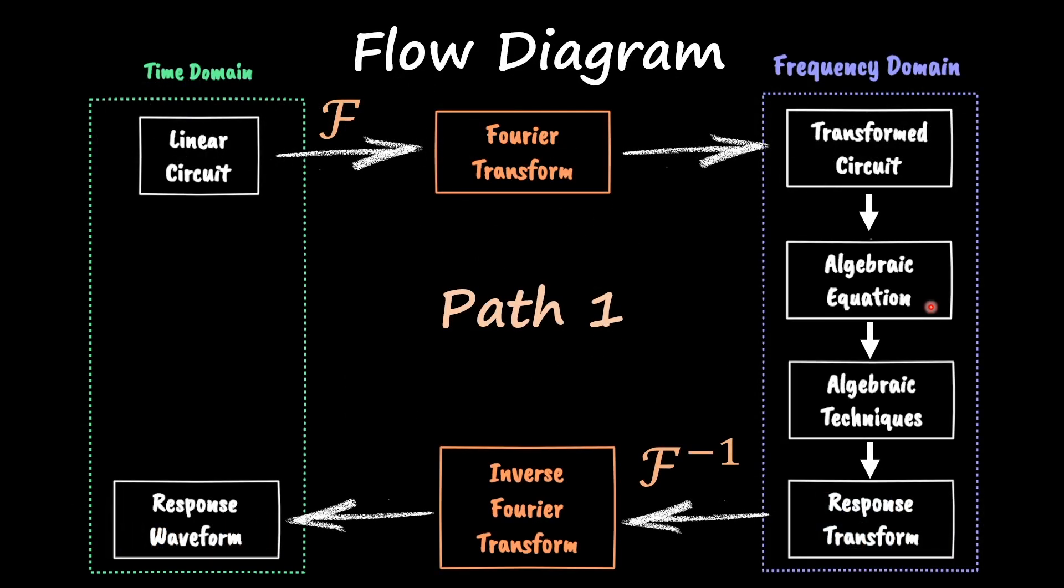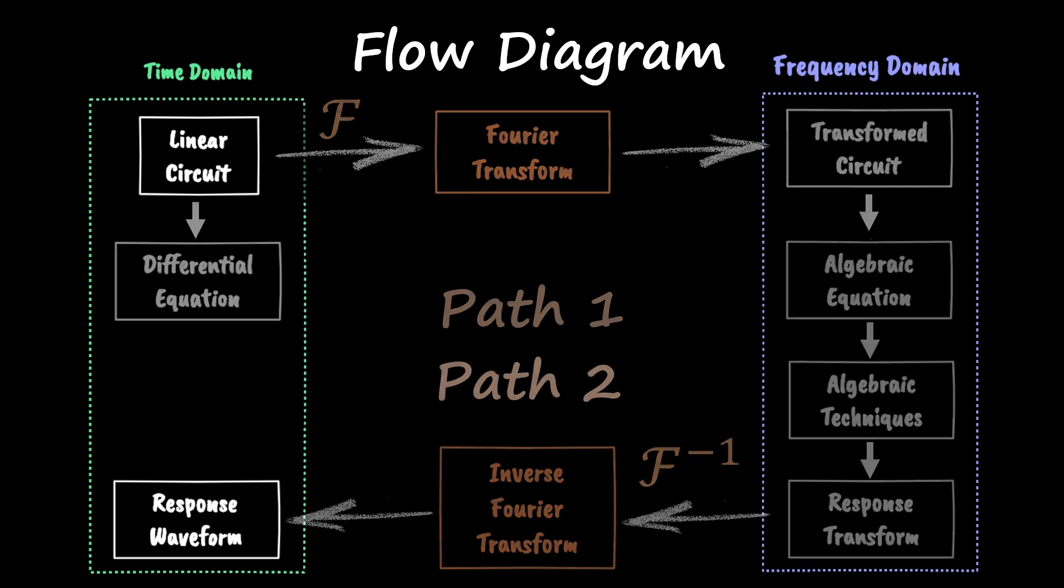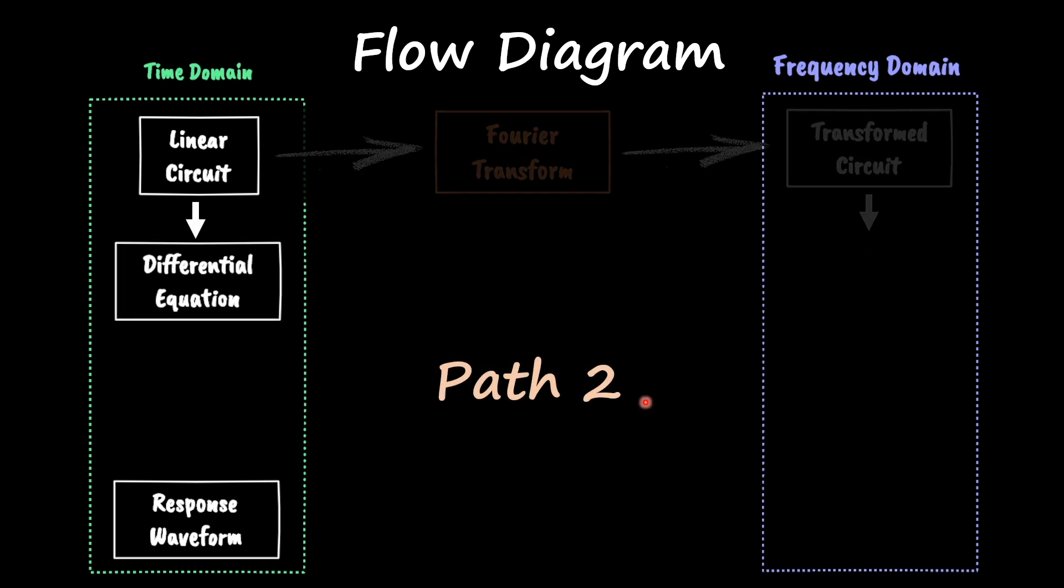In the previous video, we saw how to apply Fourier transform to our linear circuit using path number one. This video is going to focus on path number two, which relies on taking a differential equation out of our linear circuit.